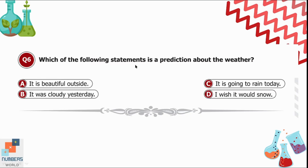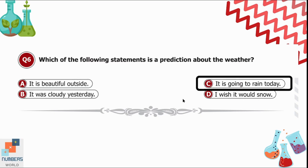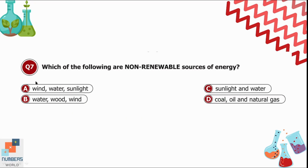Question 6: Which of the following statements is a prediction about the weather? Option A is 'it is beautiful outside.' Option B is 'it was cloudy yesterday.' Option C is 'it is going to rain today.' Option D is 'I wish it would snow.' Option C is the correct prediction — it is going to rain today.